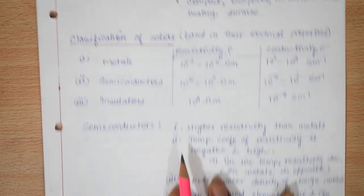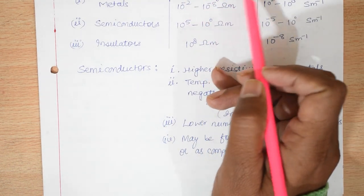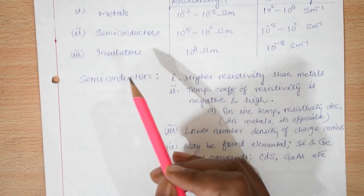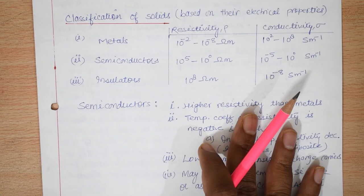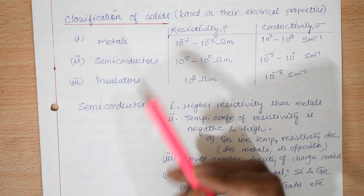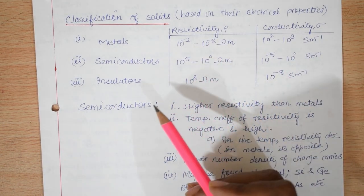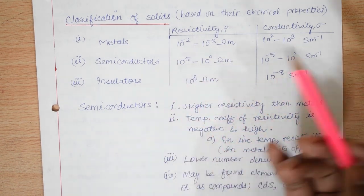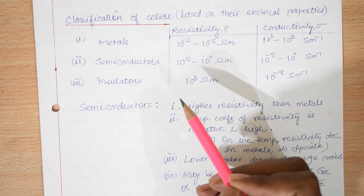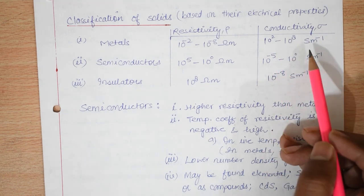Classification of solids: based on their electrical properties, that is their resistivity and conductivity, we can classify solids as metals, semiconductors, and insulators. Metals have maximum conductivity and minimum resistivity. For metals, the resistivity is 10 to the power minus 2 to 10 to the power minus 8 ohm-meter, and conductivity, which is the reciprocal of resistivity, is 10 to the power 2 to 10 to the power 8 siemens per meter.